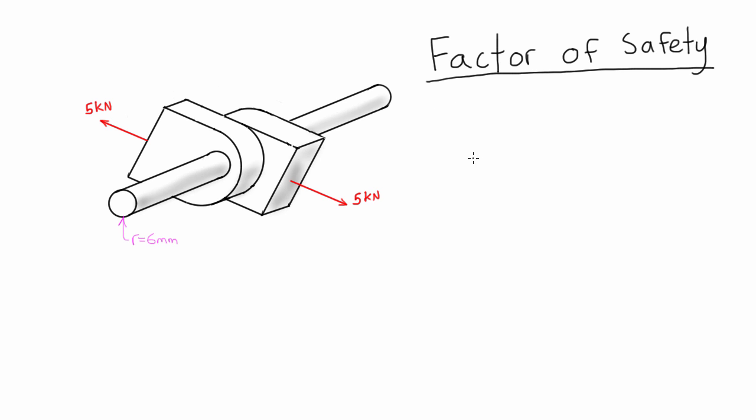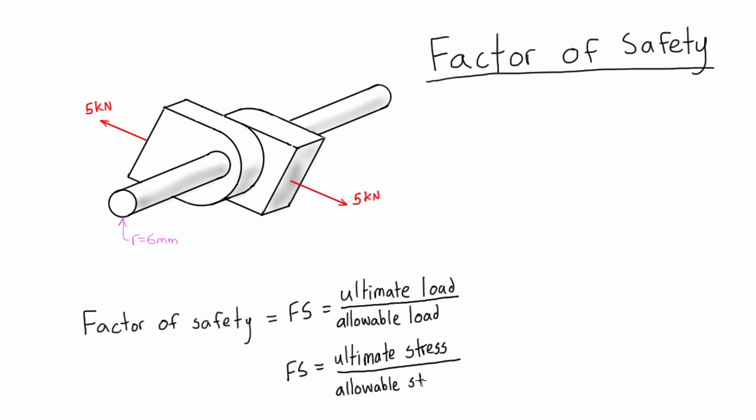So the ratio of the ultimate load to the allowable load is what we call the factor of safety. Or sometimes you'll see it as the factor of safety is also the ratio of the ultimate stress to the allowable stress, because they are proportional to each other.